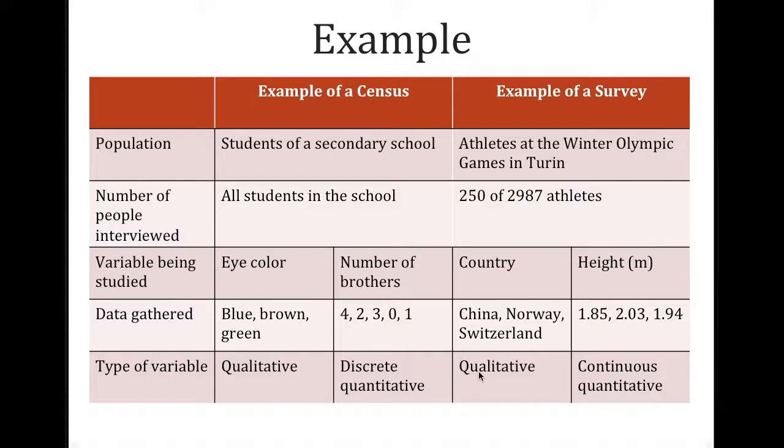So for country, in terms of the type of variable, it is qualitative because the data is names. Whereas for heights, the data are numbers with decimals. So this is quantitative, but it's also continuous quantitative.